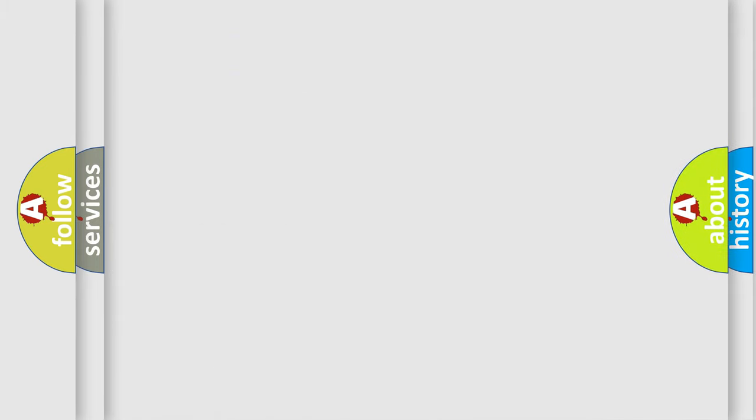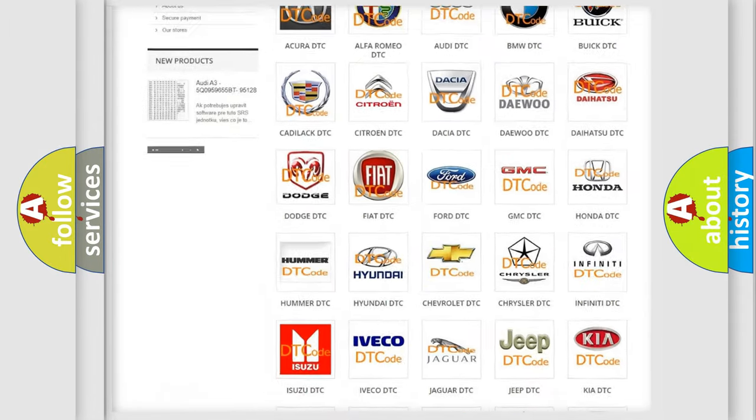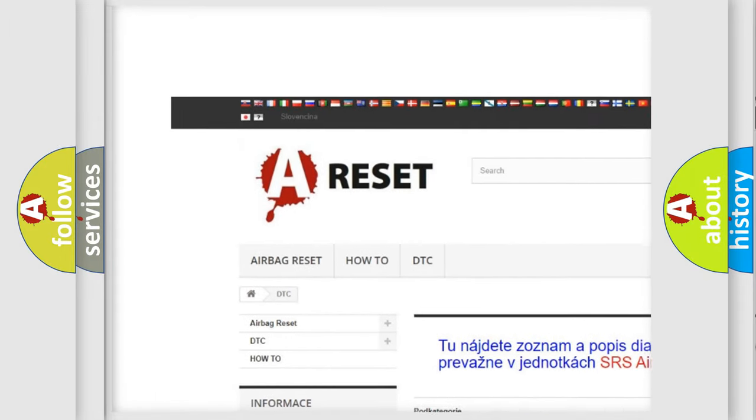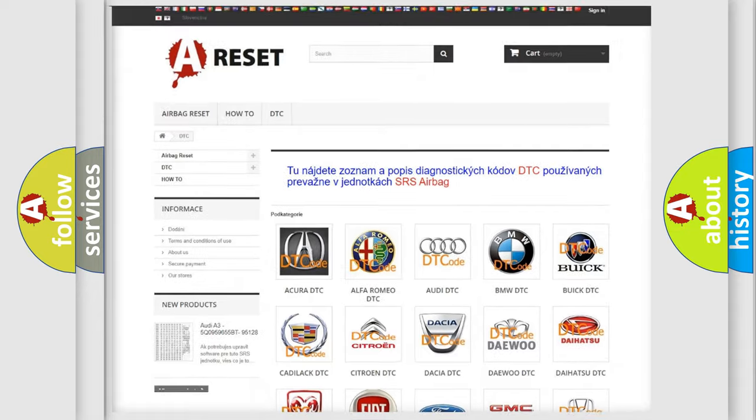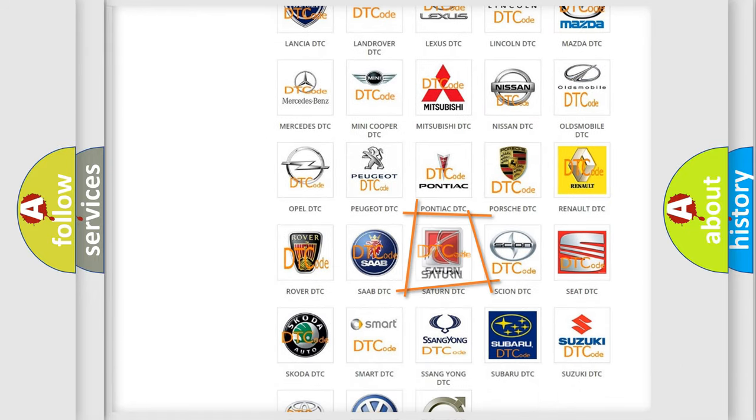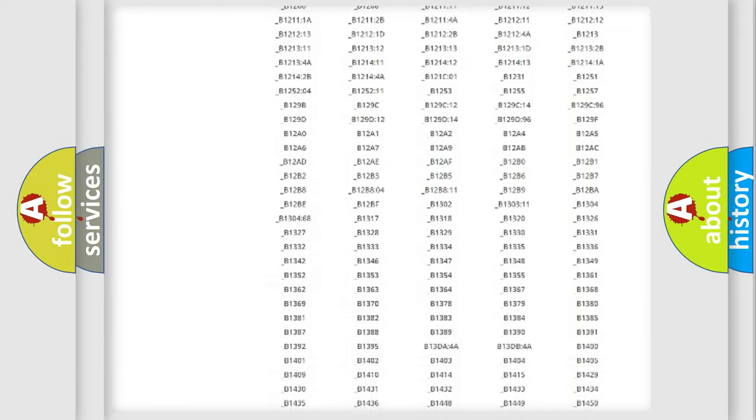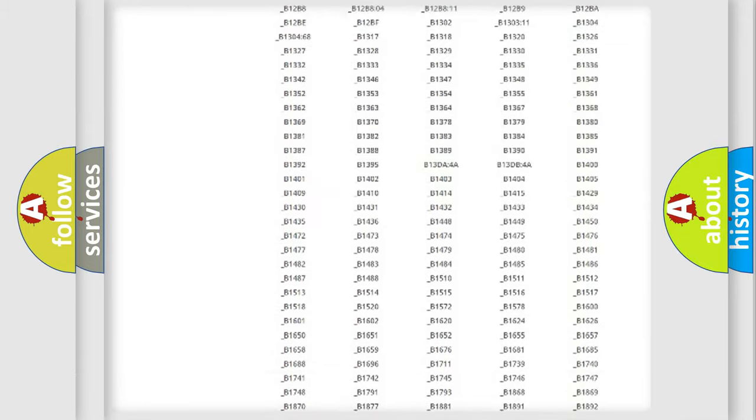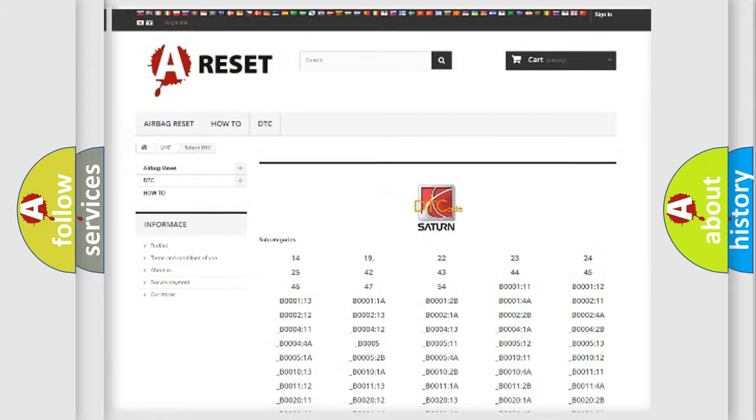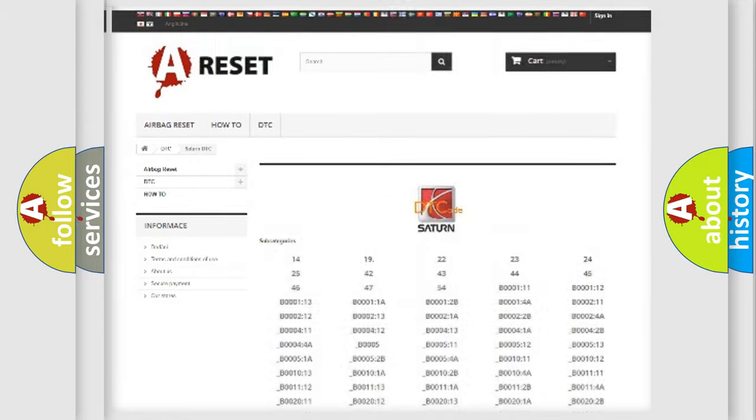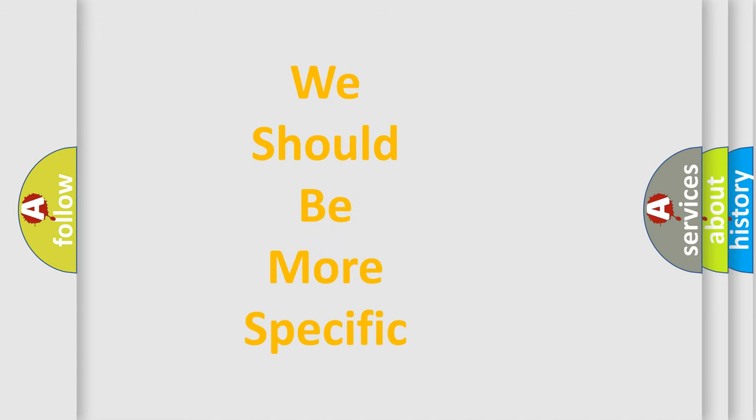Our website airbagreset.sk produces useful videos for you. You do not have to go through the OBD2 protocol anymore to know how to troubleshoot any car breakdown. You will find all the diagnostic codes that can be diagnosed in Saturn vehicles, and also many other useful things. The following demonstration will help you look into the world of software for car control units.